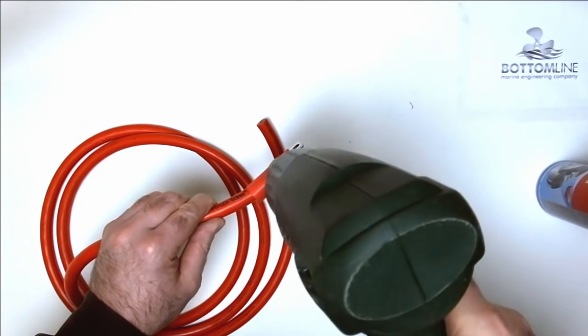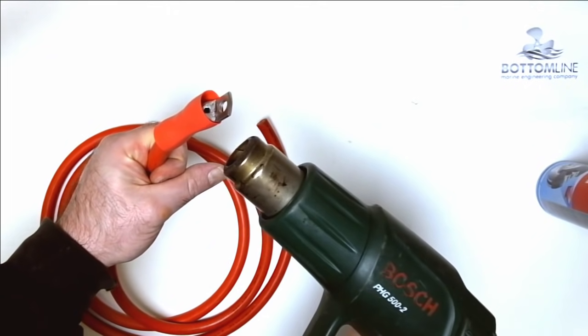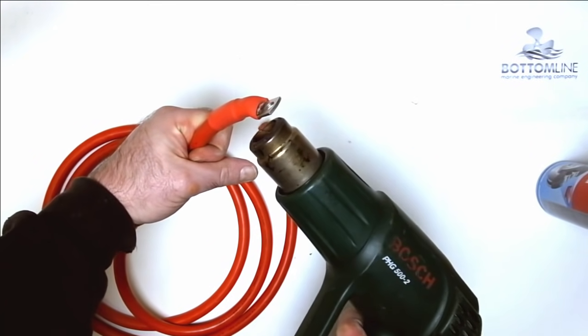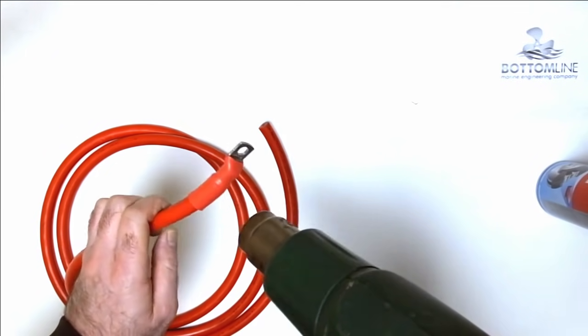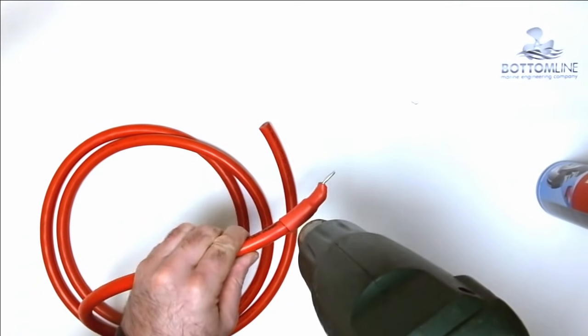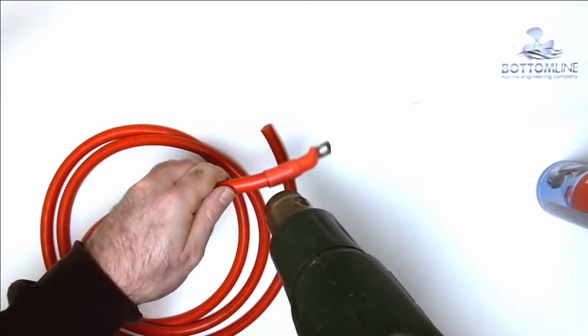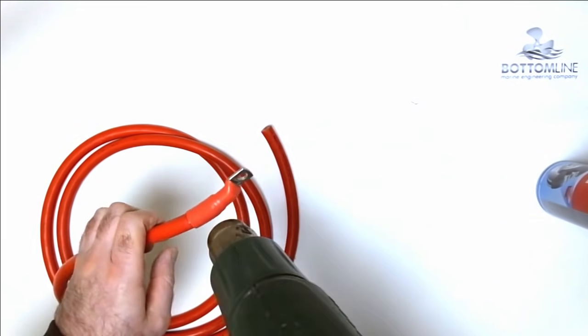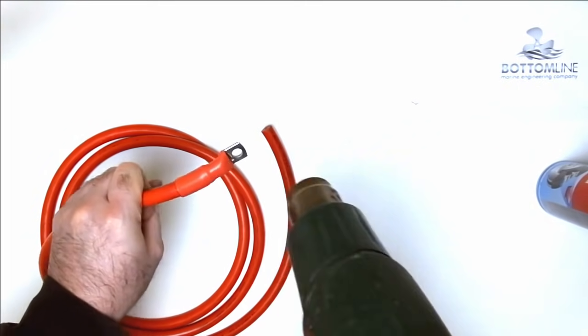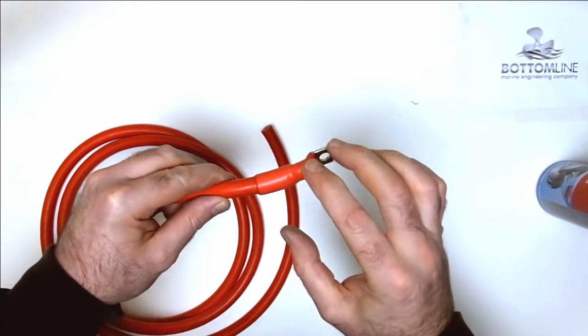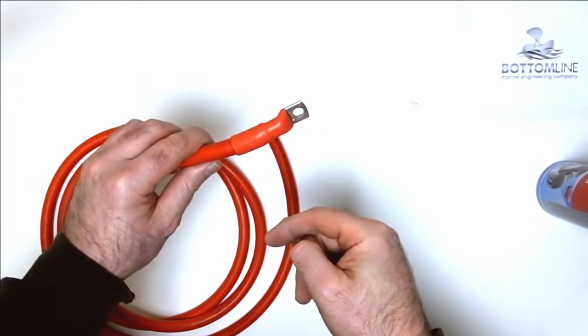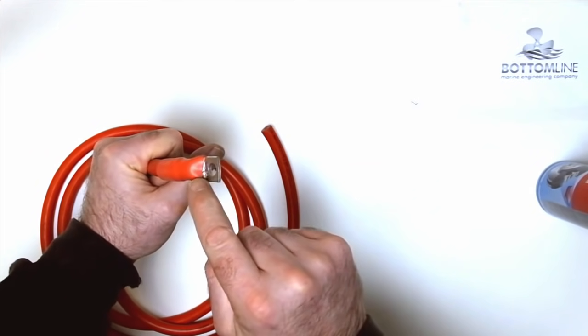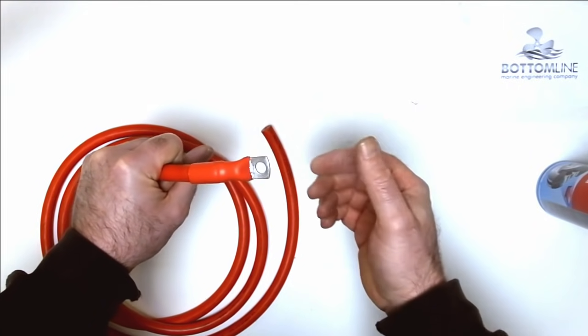I don't want to try and do this too quickly otherwise you will burn the heat shrink and make it go a horrible colour. Gradually shrink it down. What you're looking for is you want to be able to see the adhesive starting to come out to the end of the tube. And then you can see there the adhesive has come out so you know that it's under pressure and it's forced all the air out and it's stuck all the way along. And then while that's still setting just squash it down. So that it seals the little hole there. And there we go.